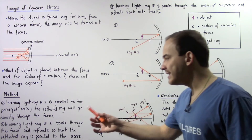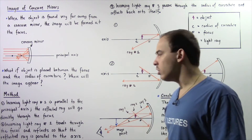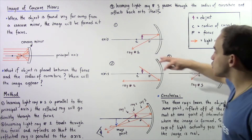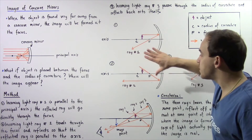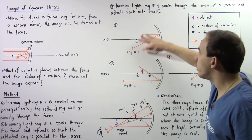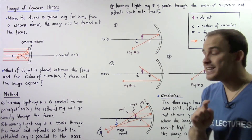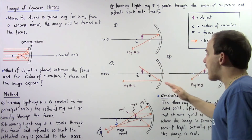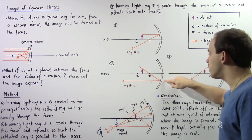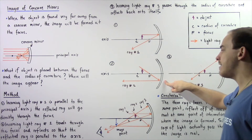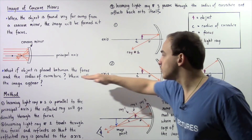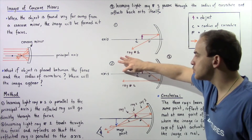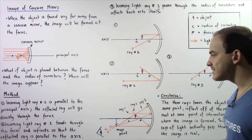In step two we look at incoming light ray number two. This light ray bounces off the object at the same exact point as ray one, but now it travels directly through the focus. Because it travels directly through the focus, when it bounces off our concave mirror, the reflected ray number two will be parallel with respect to our principal axis.